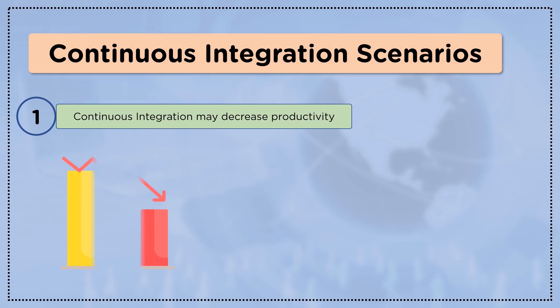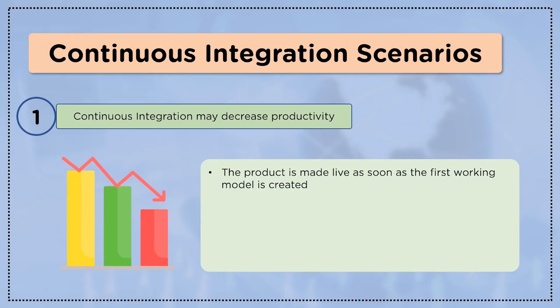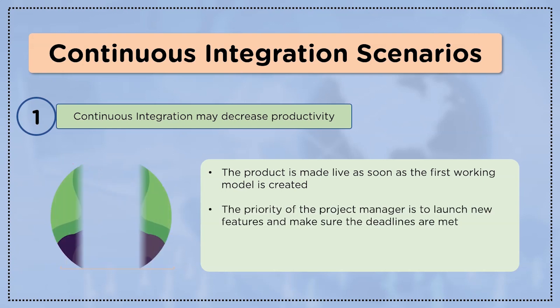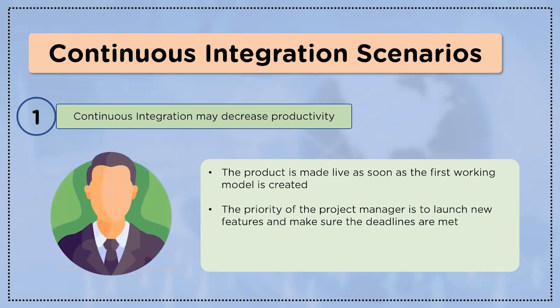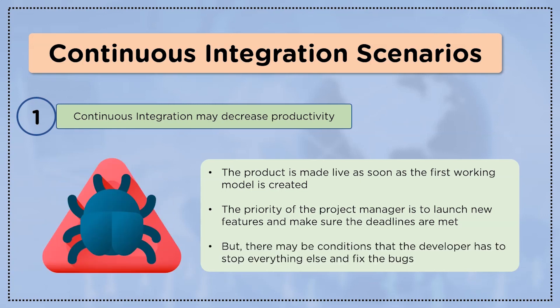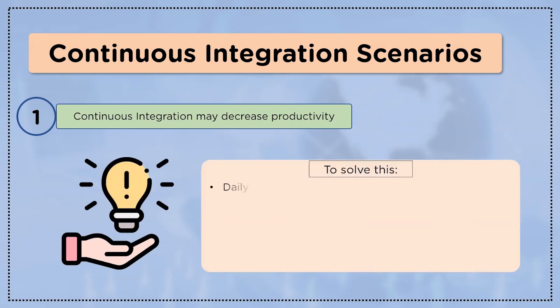The first scenario is that continuous integration may decrease productivity. The problem is that the product is made live as soon as the first working model is created. Project managers pay most of their attention to launching new features and ensuring deadlines are met, and there may be conditions where a developer has to pause everything else and fix bugs first. Let's look at key points to solve this.